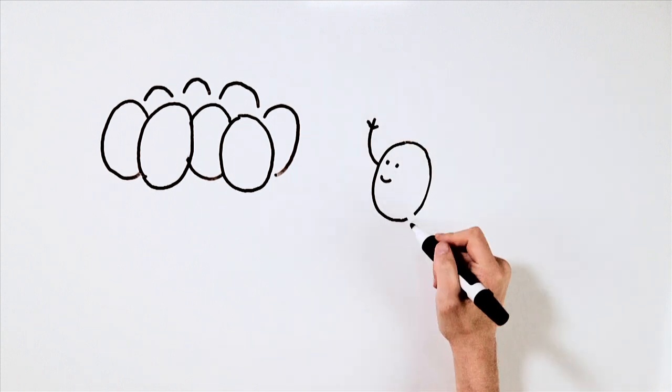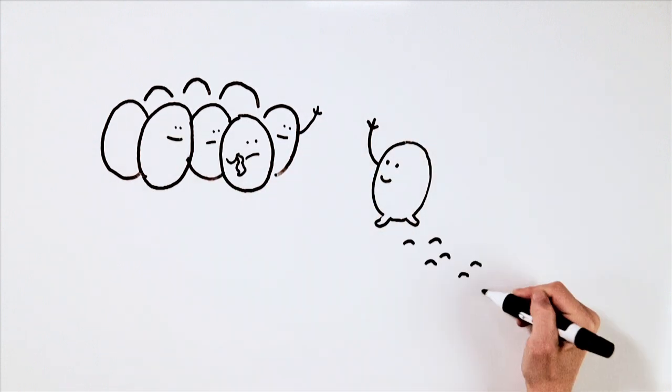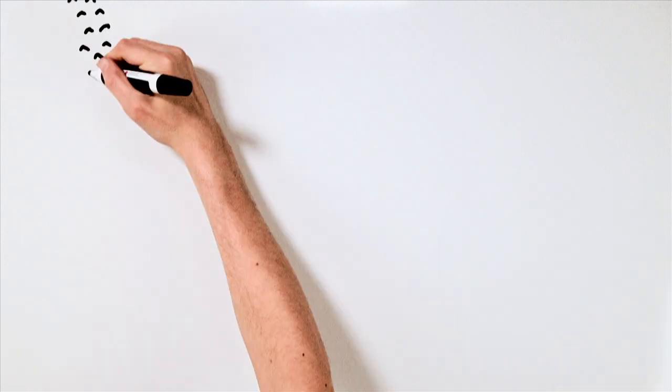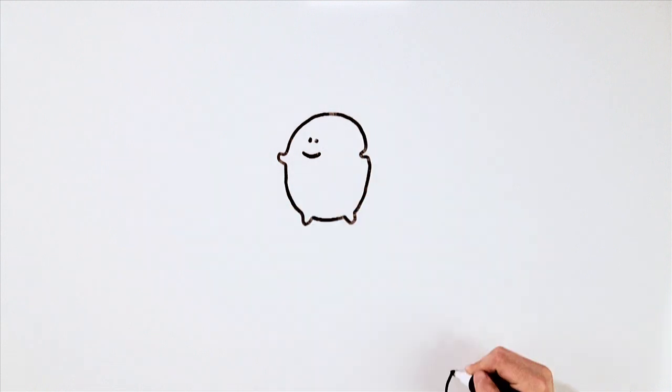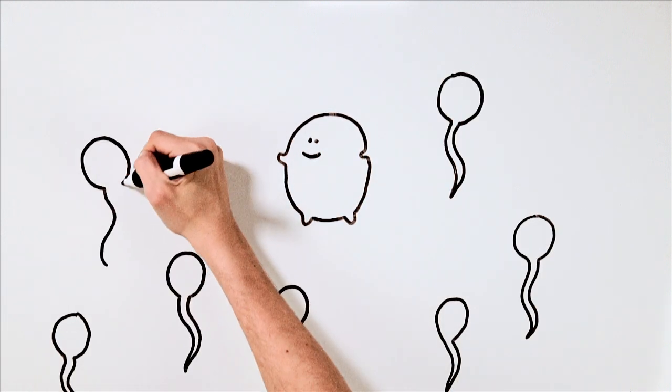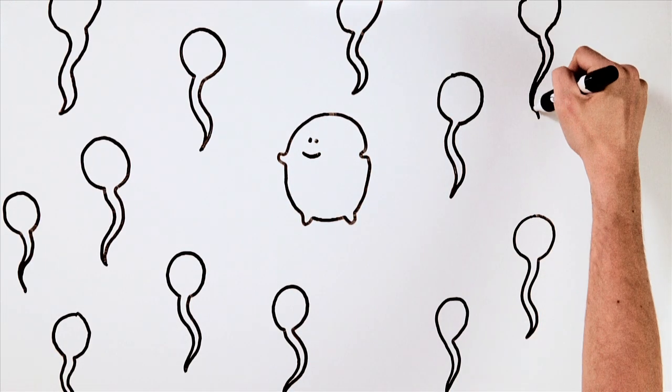This is what happens in the body. An egg is released from the ovary into the fallopian tube. The egg then makes its way along the fallopian tube to the uterus. This is the point that it can be fertilized by sperm.